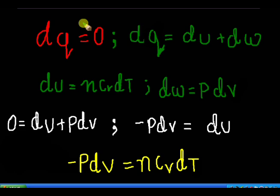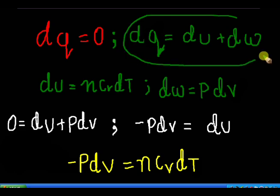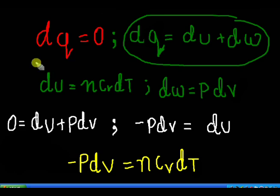We know that in an adiabatic process there is no change in heat. So delta Q is equal to zero. According to the first law of thermodynamics, we can see that DQ is equal to DU plus DW — I am writing the differential form of the equation.